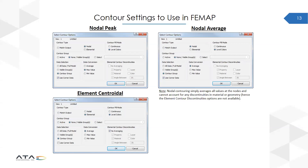The contour settings to use in FEMAP to achieve nodal peak, nodal average, and element centroidal contours are shown on this slide. For nodal peak, select nodal max value and use corner data. For nodal average, select nodal average and use corner data. For element centroidal, select elemental no averaging and uncheck use corner data.